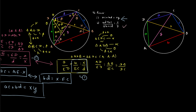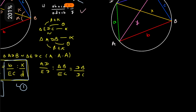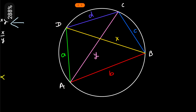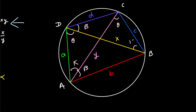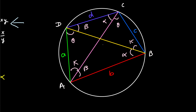Now let us see the proof of the second equation. I am taking another diagram — the same circle, the same quadrilateral with the same markings — and marking angles: theta, theta, beta, beta, k, k, alpha, alpha. The two diagonals meet at a point; because of this intersection they are bisected (not equally) into smaller segments. Let the intersection point be O. I will label the small lengths as: DO equals p, the other part as q, this one as r, and this one as s.